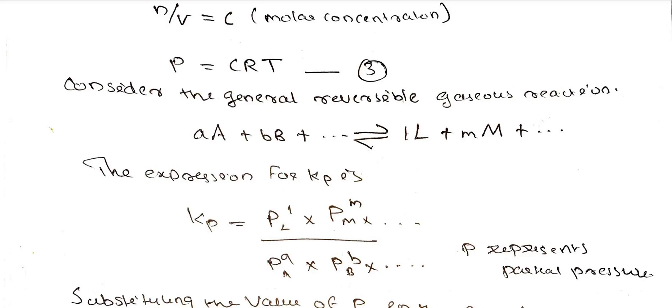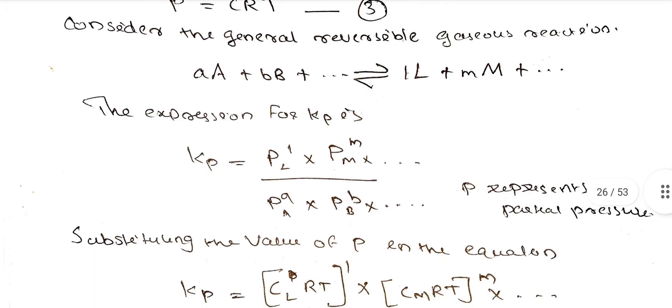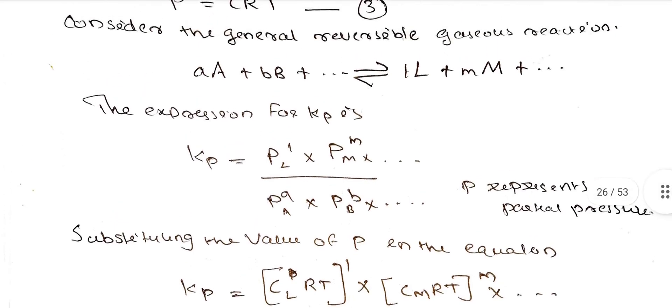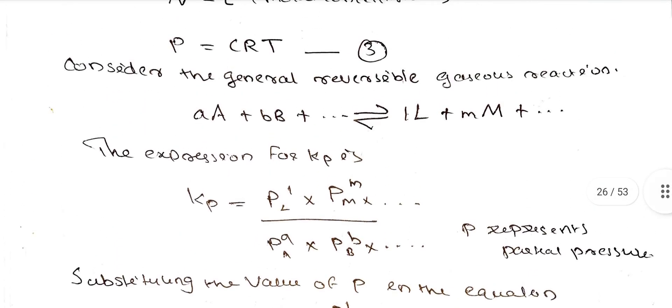We get the forward reaction — we get the products by the reactants in terms of pressure. P represents partial pressure. Now we substitute the value of P into the expression.